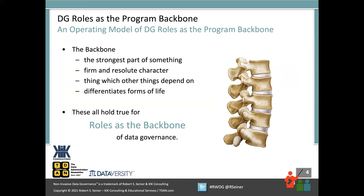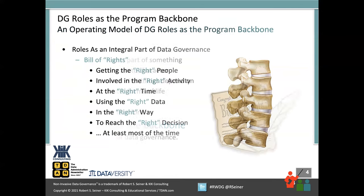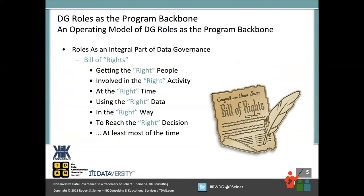Your data governance roles should be at least one of the strongest parts of your data governance program. It needs to be firm, it needs to be resolute, it needs to be intentional within your organization. This operating model — these roles and responsibilities — is going to be the key that everything else in your program depends on. Just as some forms of life have backbones and some don't, your data governance program needs a backbone. I believe the roles and responsibilities are what become the main thing that people see and understand when it comes to the act of governing data within the organization.